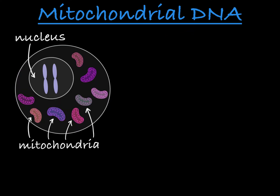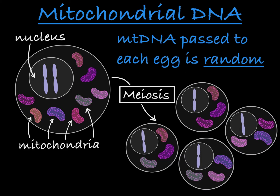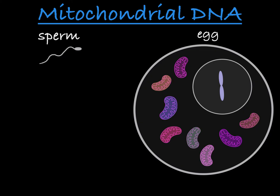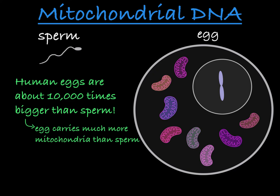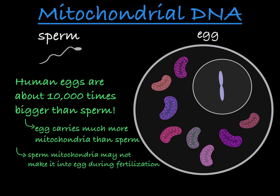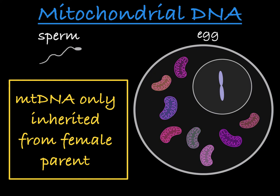How is the inheritance of mtDNA different from nuclear DNA? During meiosis in females, the mitochondria of the cell divide as well and are randomly split up into the resulting eggs. As a result, the mitochondrial DNA passed on to each egg is random. The egg is much larger than the sperm and contains a lot more cytoplasm, and therefore a lot more mitochondria. Furthermore, when fertilization takes place, the mitochondria from the sperm might not make it into the egg, and even if it does, it's marked for destruction in the resulting zygote. So the resulting offspring will only receive mitochondria from the cytoplasm of the egg, and therefore only receive mitochondrial DNA from the female parent.